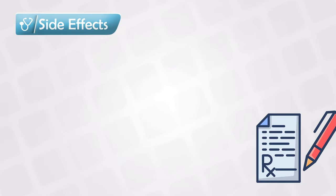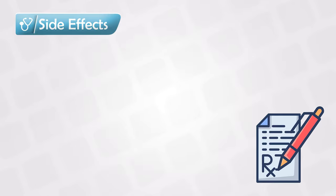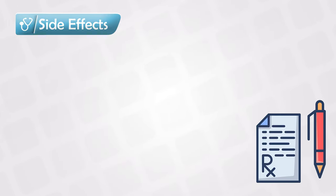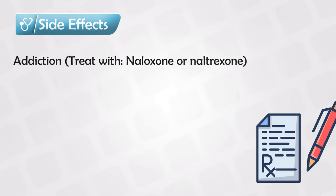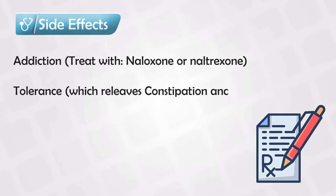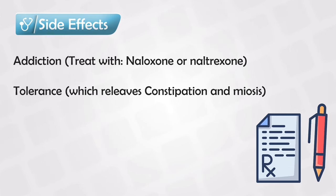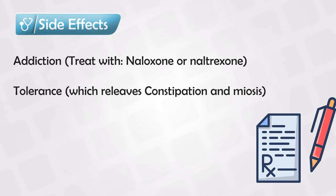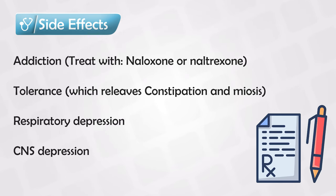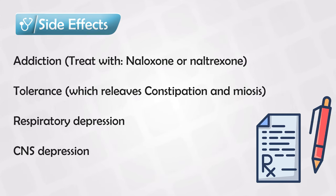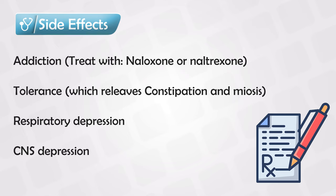The side effects of opioid medications are all similar, and the severity depends on the potency of the medication. The most common side effect is addiction, and we treat this with naloxone or naltrexone. There is also tolerance, which is sometimes useful — because if a patient is dependent on opioids for a long time, over time they will not experience constipation or miosis. So constipation and miosis are acute side effects, and of course respiratory depression and CNS depression.